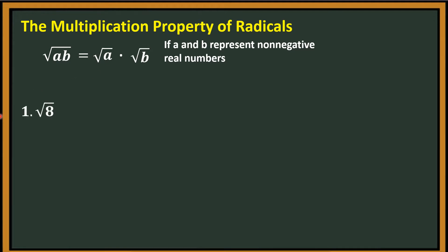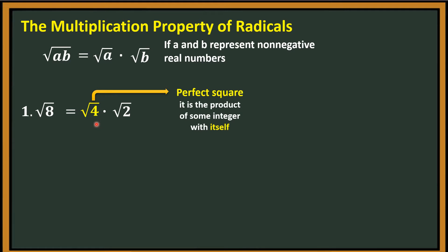For example, the square root of 8. 8 is not a perfect square but we can factor it. We just think of the two factors wherein one factor is a perfect square. A perfect square is a product of some integer with itself.